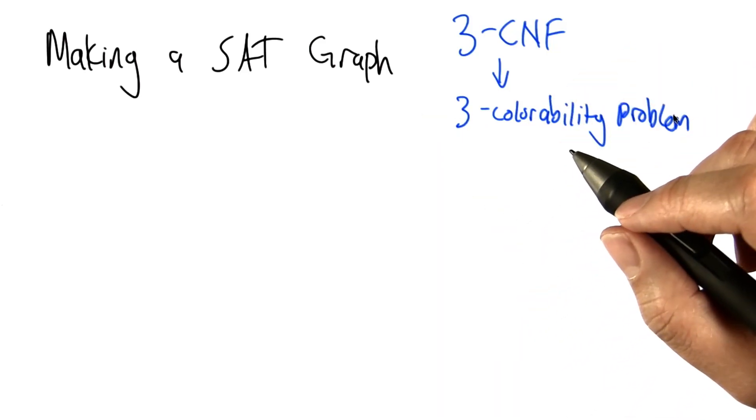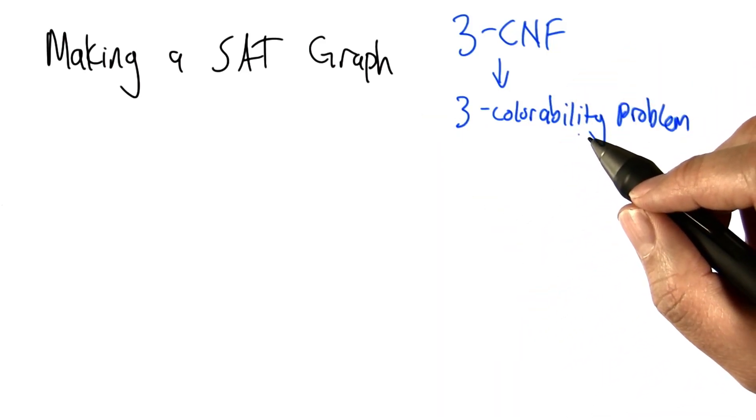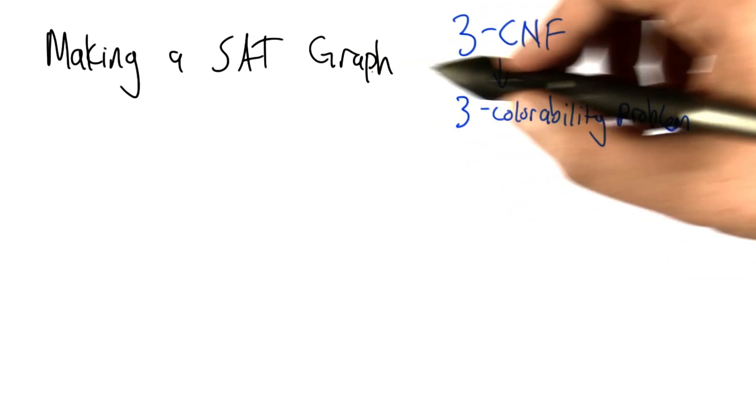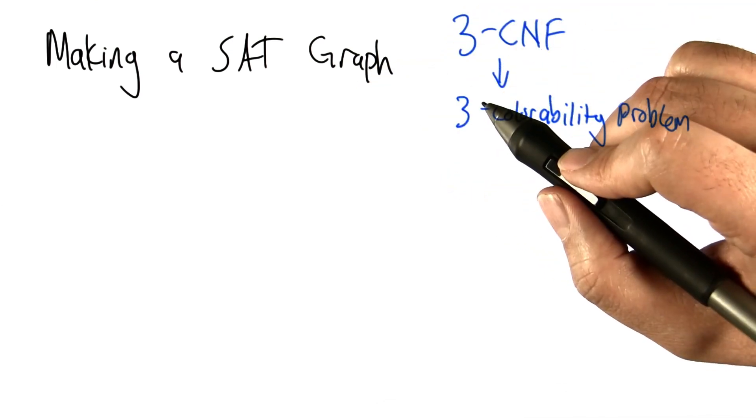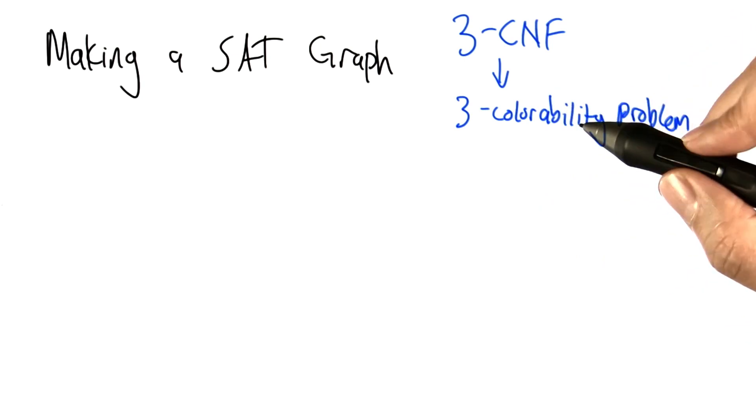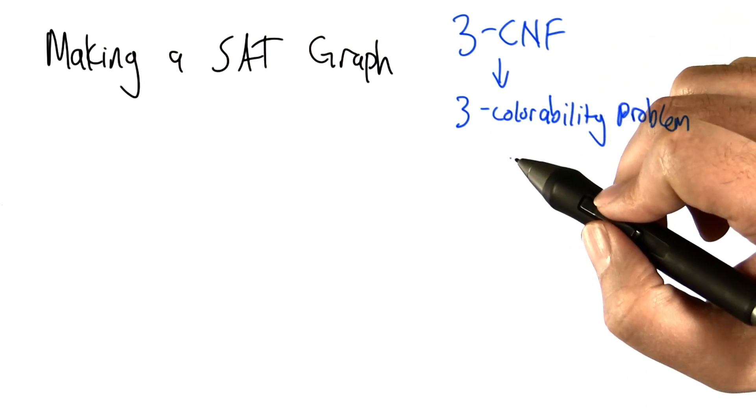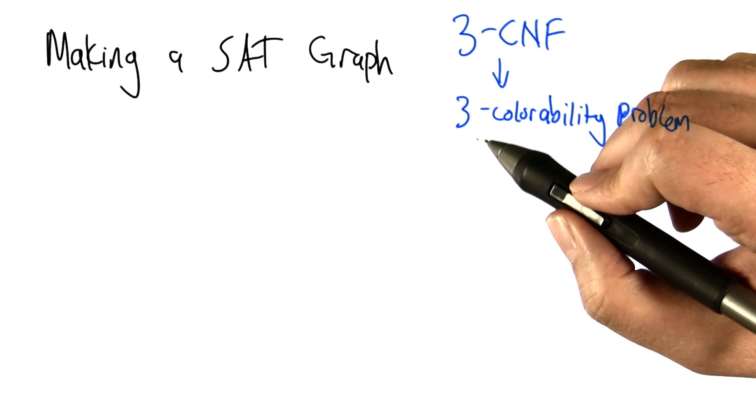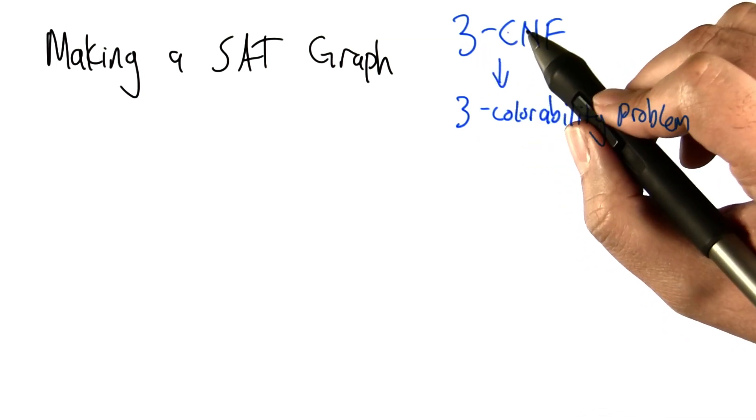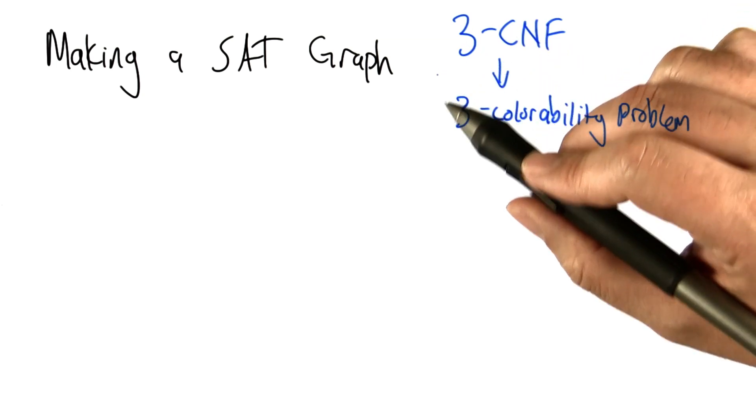All right, so to do the last little bit of this proof to show that 3-colorability is NP-hard, we're going to show that if we had the ability to solve 3-colorability problems in polynomial time, then we could solve 3-SAT problems in polynomial time as well.